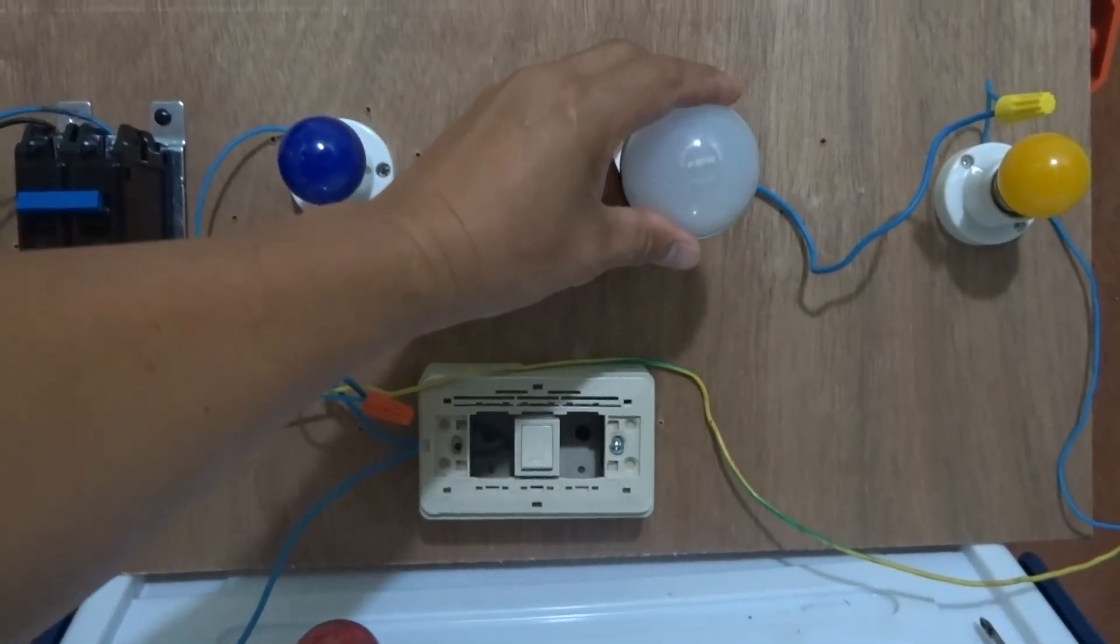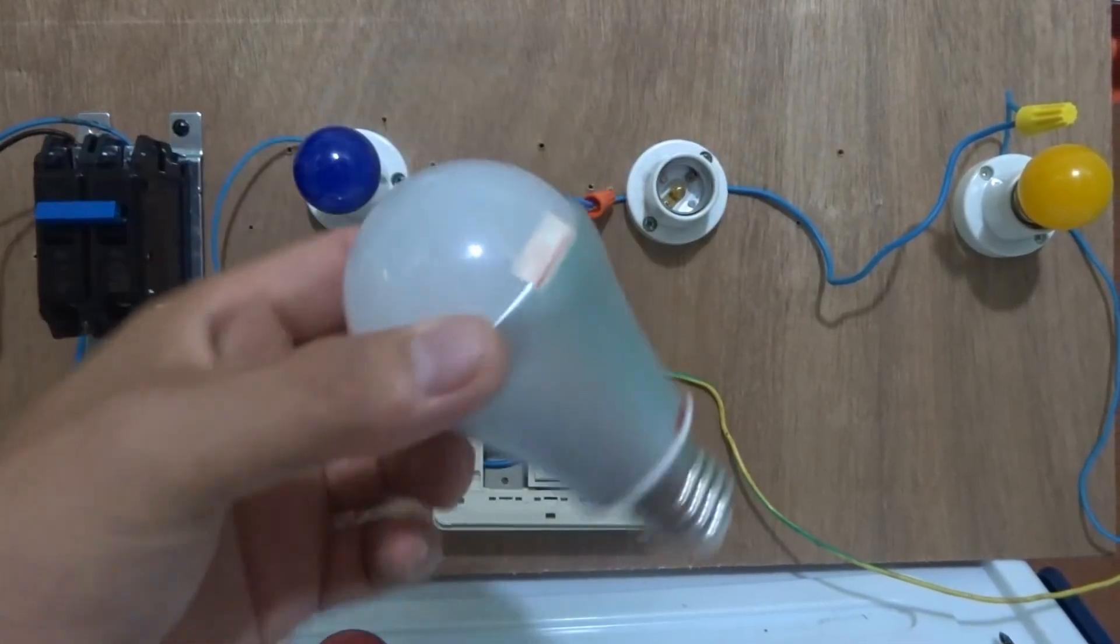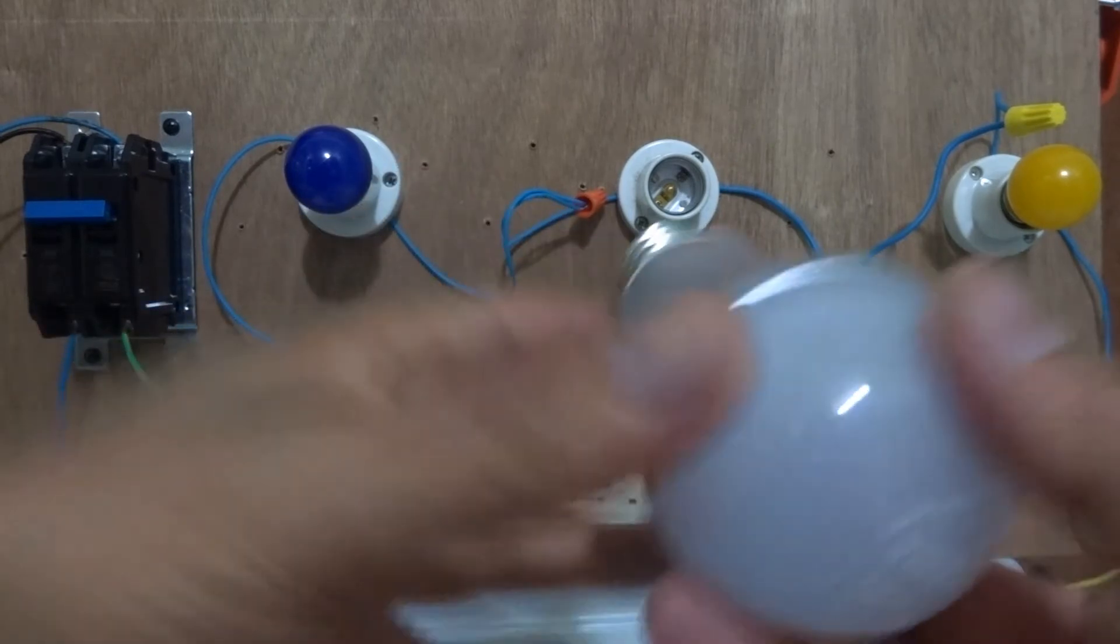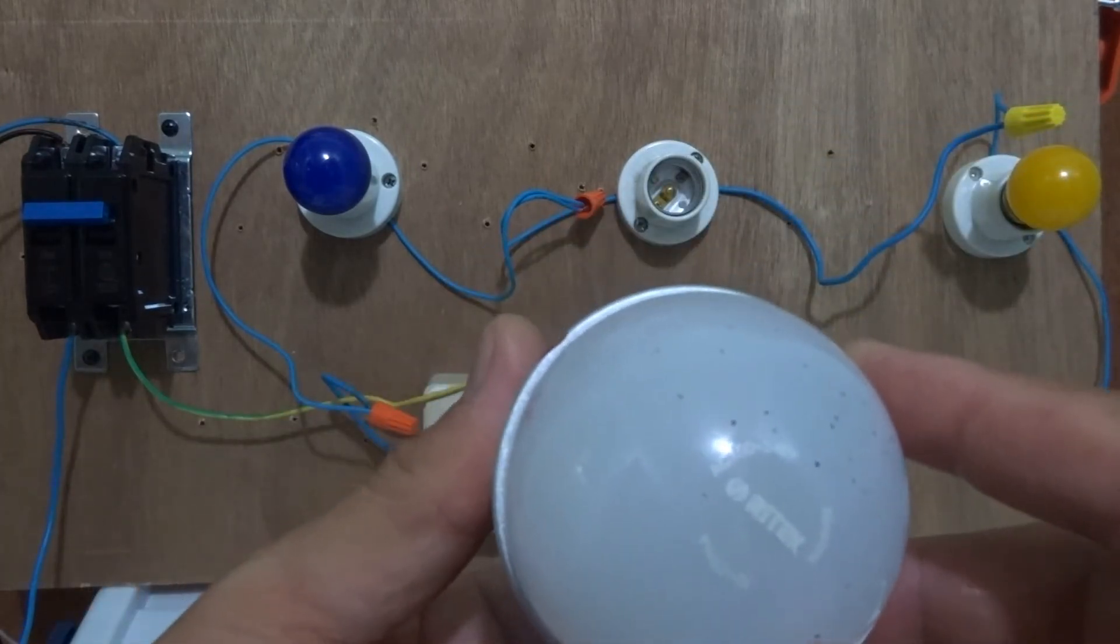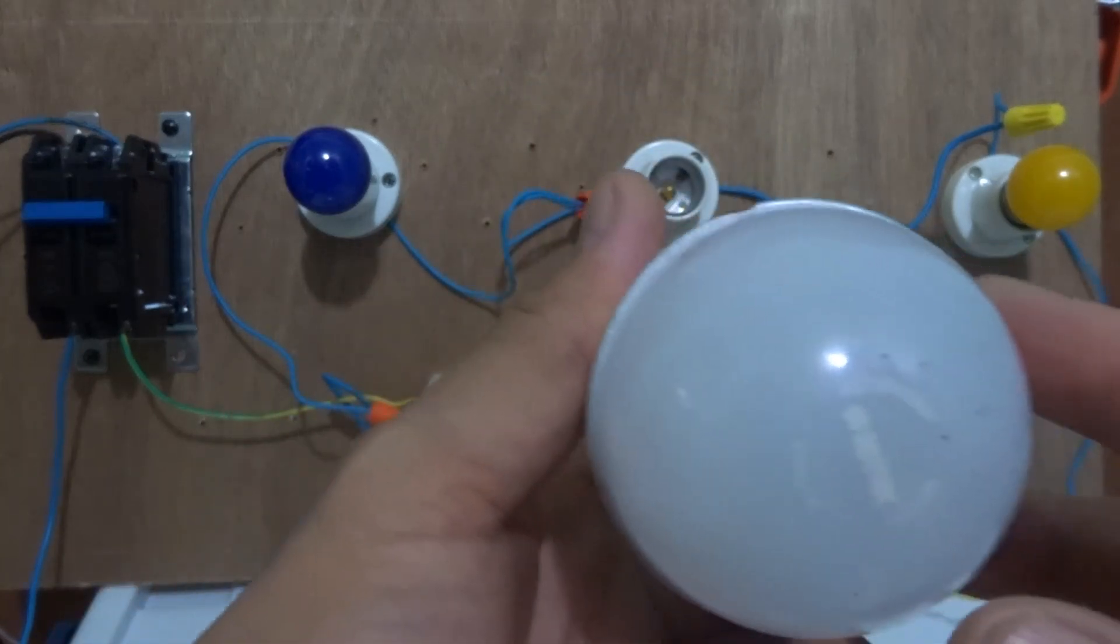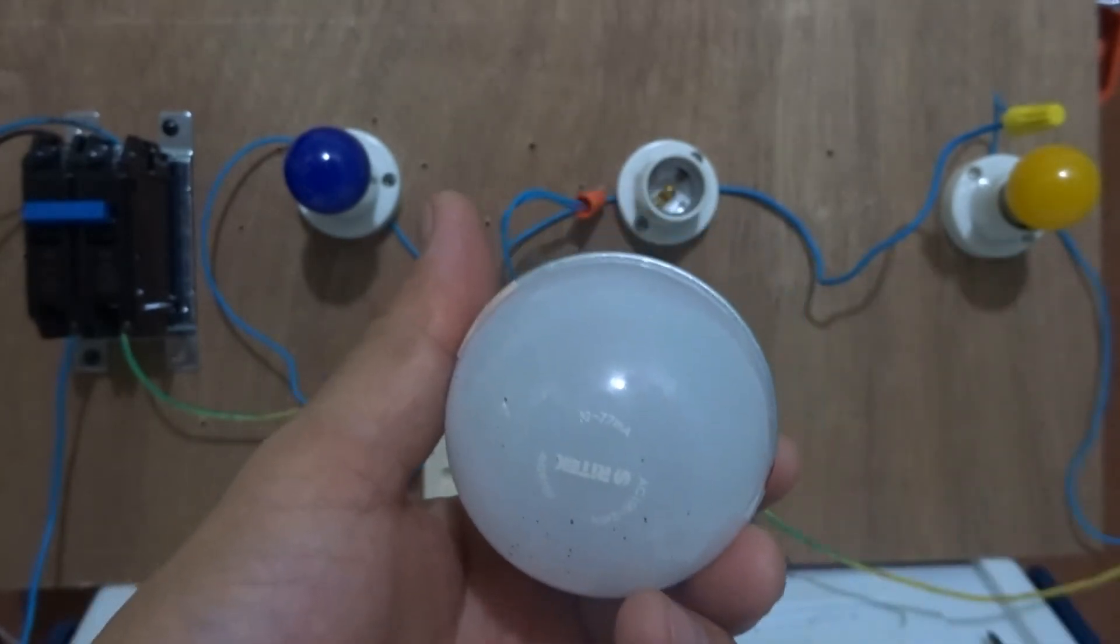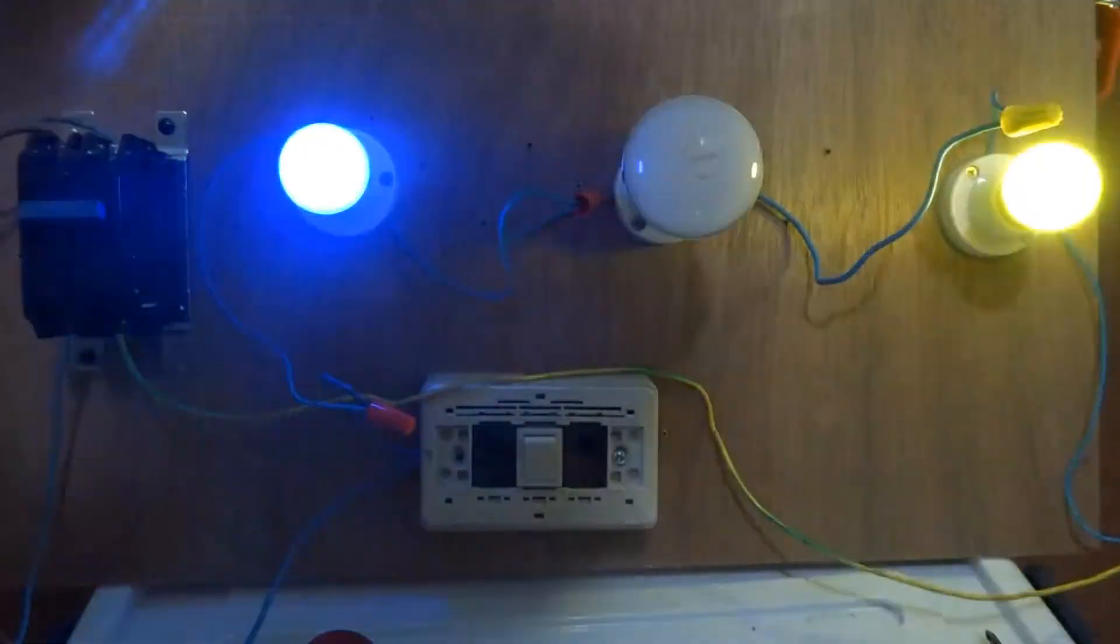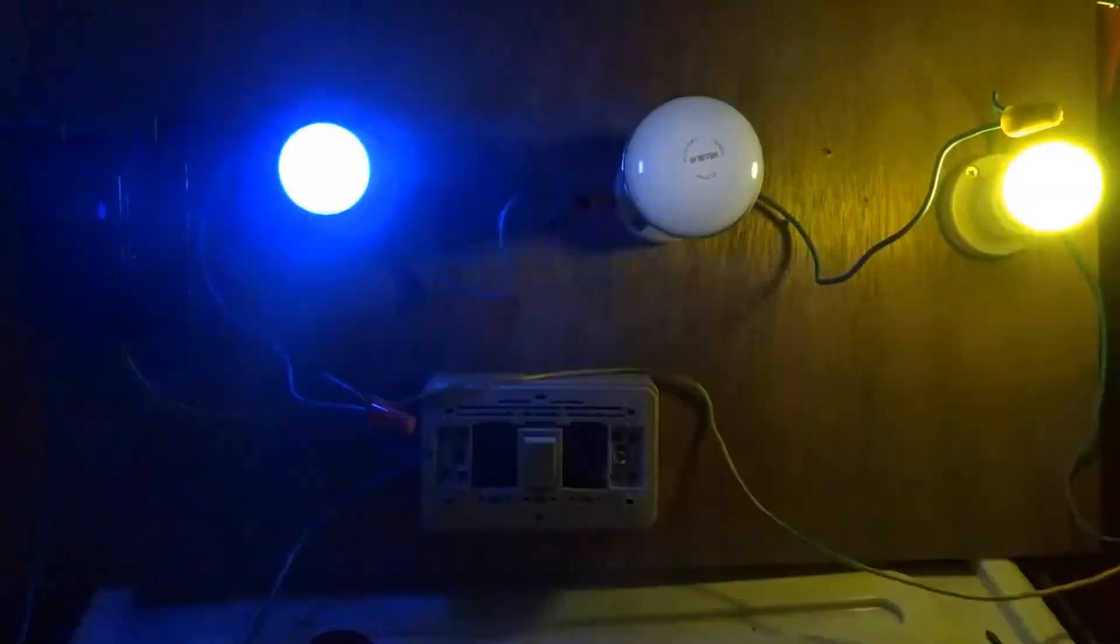Because I put a higher kilowatt bulb in a series circuit. When you put a higher load, the voltage is improper. That's why it's flickering. I hope you like my demonstration.